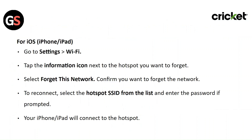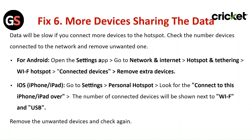For iOS, go to Settings, then Wi-Fi. Tap on the information icon next to the hotspot you want to forget, select 'Forget This Network,' and confirm you want to forget the network. To reconnect, select the hotspot SSID from the list and enter the password if prompted — your iPhone or iPad will connect to the hotspot.